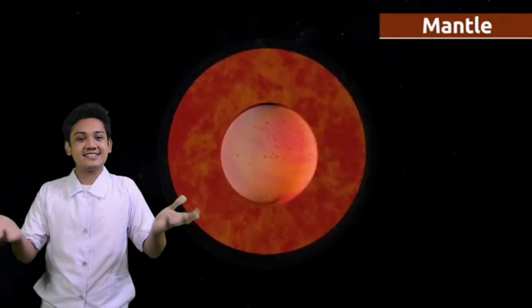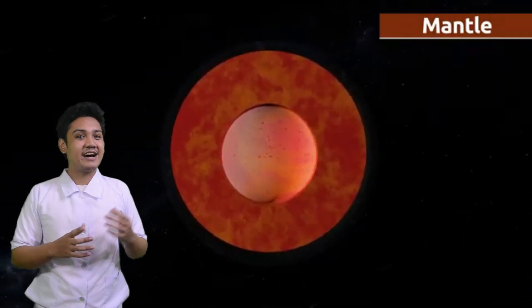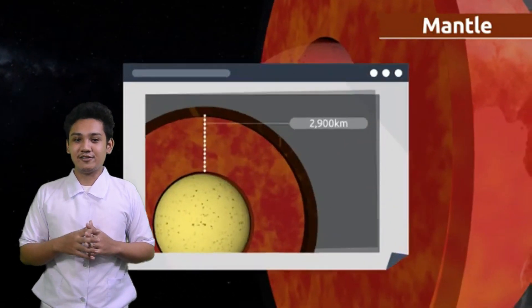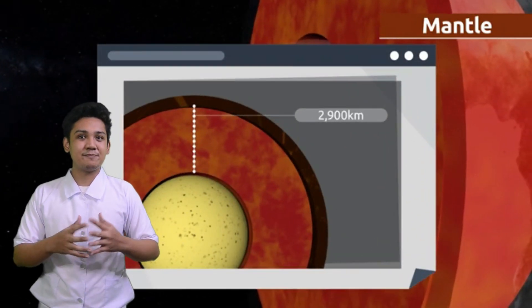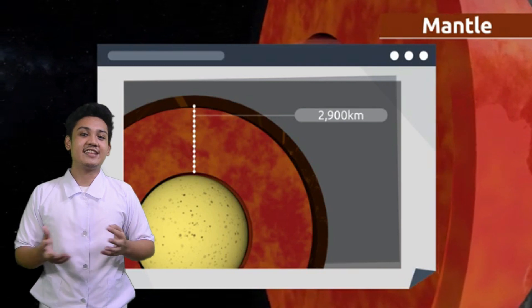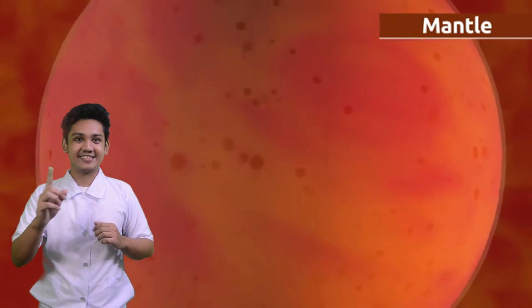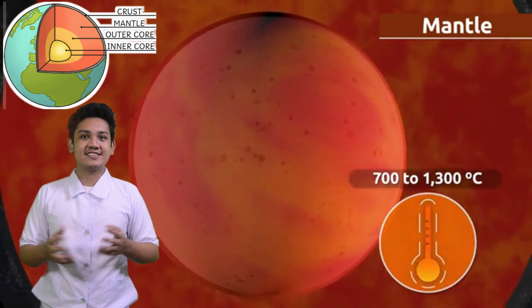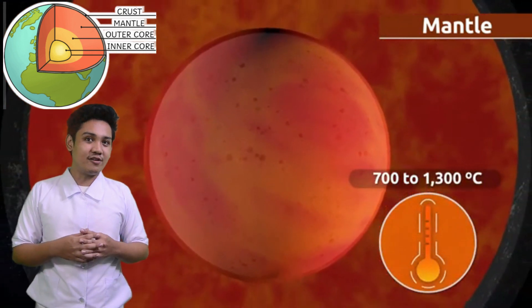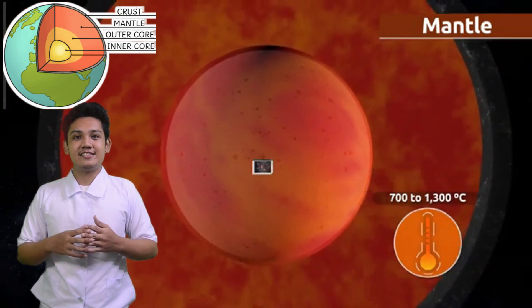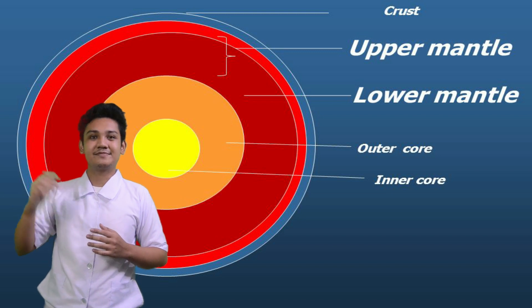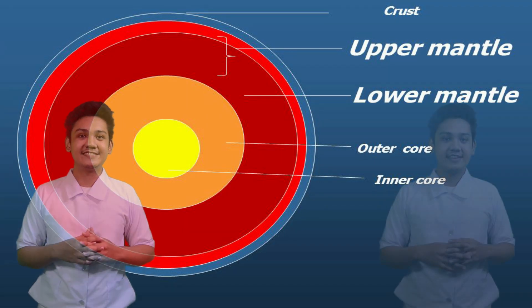The next layer is the mantle. It represents about 84% of the total weight and mass of our planet. It can be found between the crust and the core, and is divided into the upper and lower mantle.